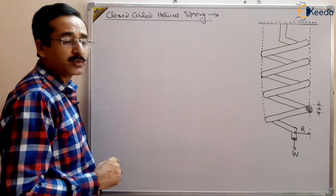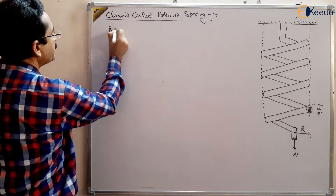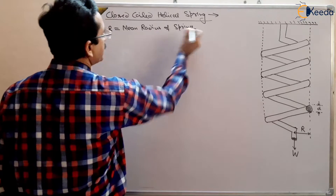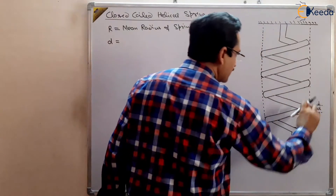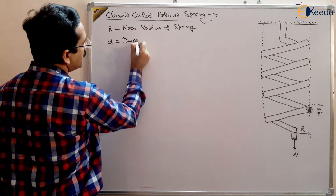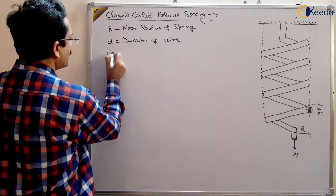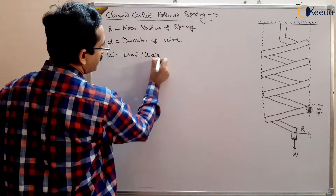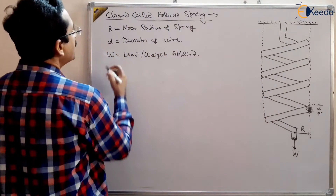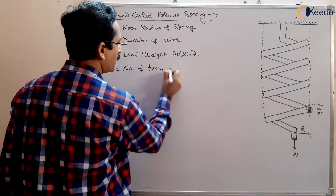There are some terms used in closed coil helical spring. R is the mean radius of the spring. Small d is the diameter of the wire from which the spring is made. W is the load or weight applied. N is the number of turns of the spring coil.